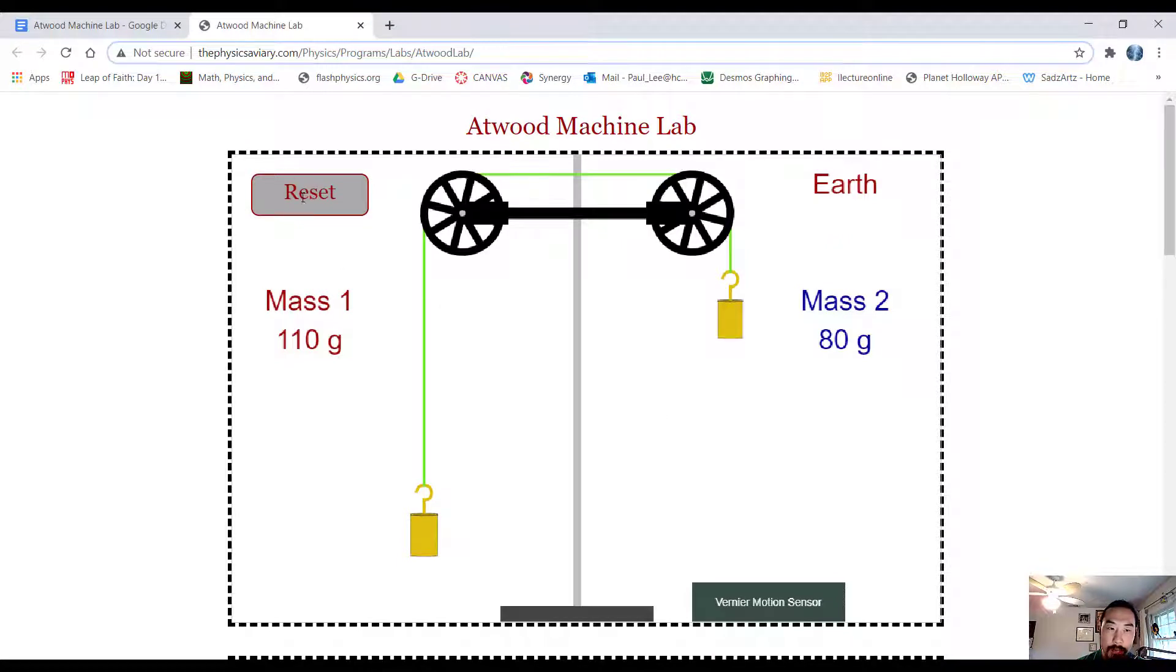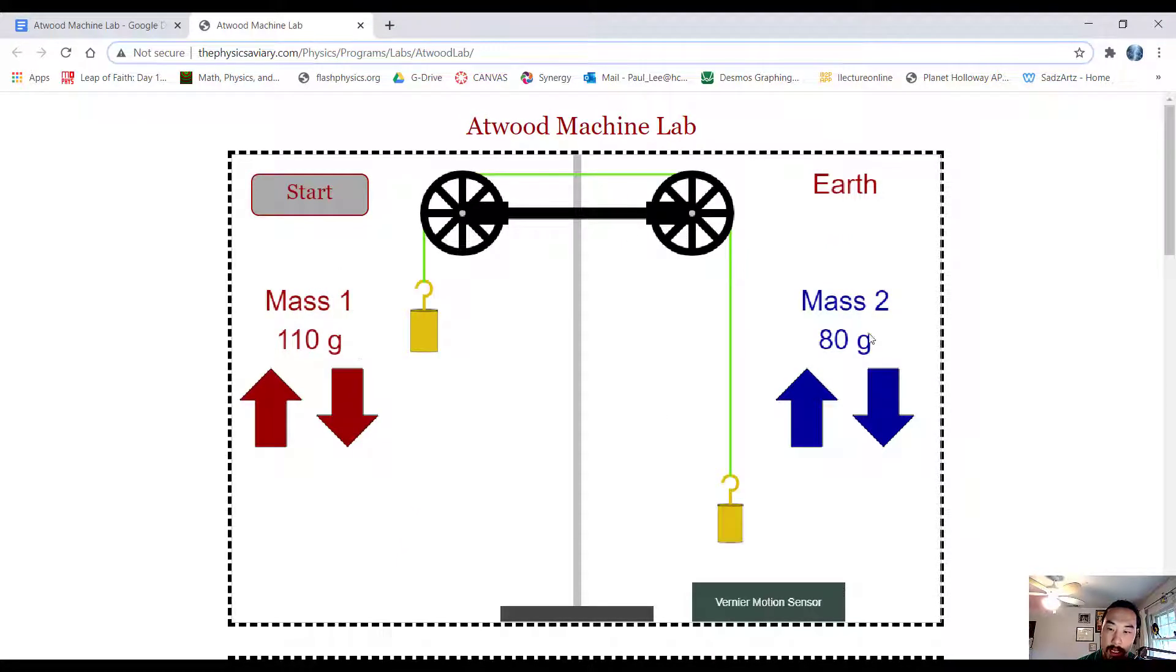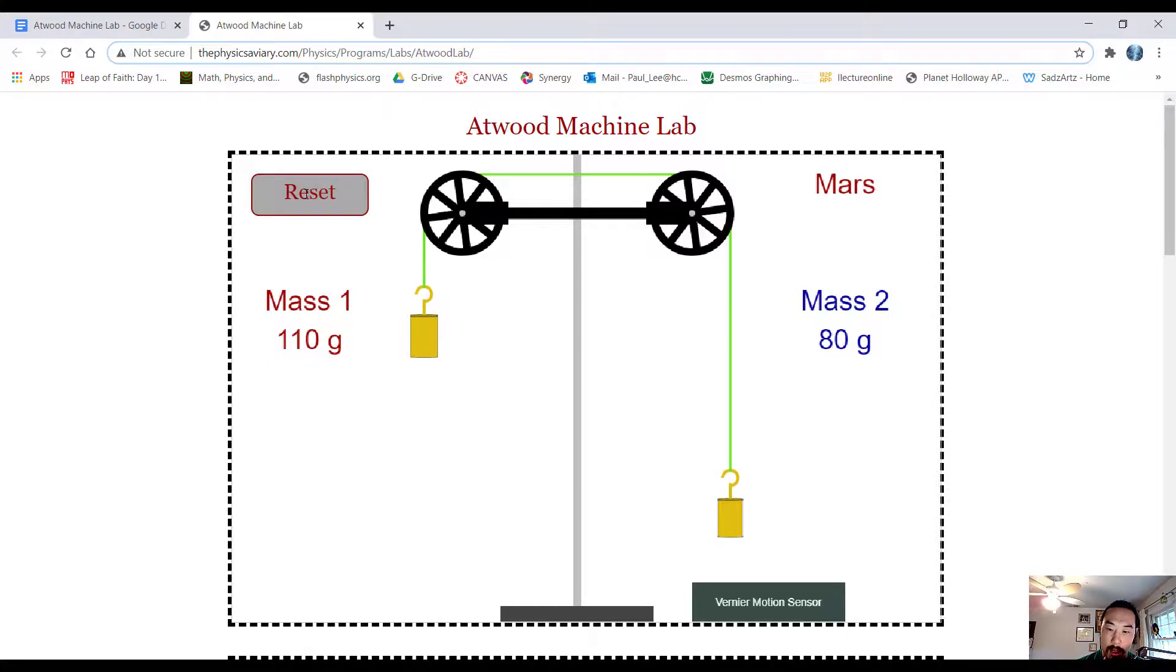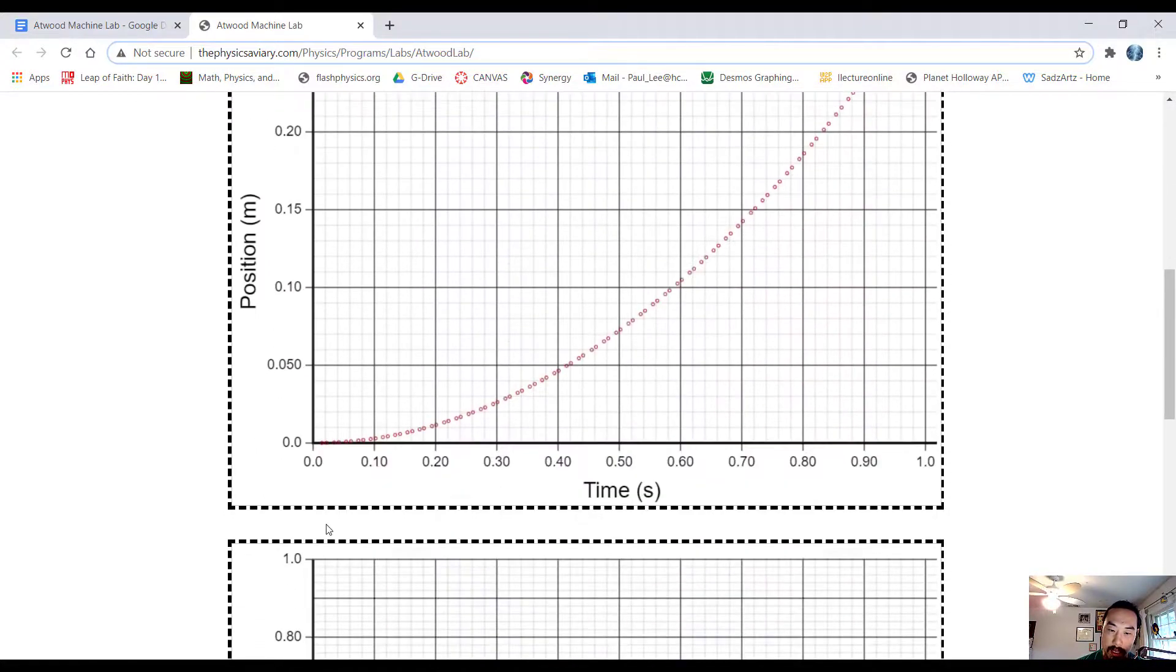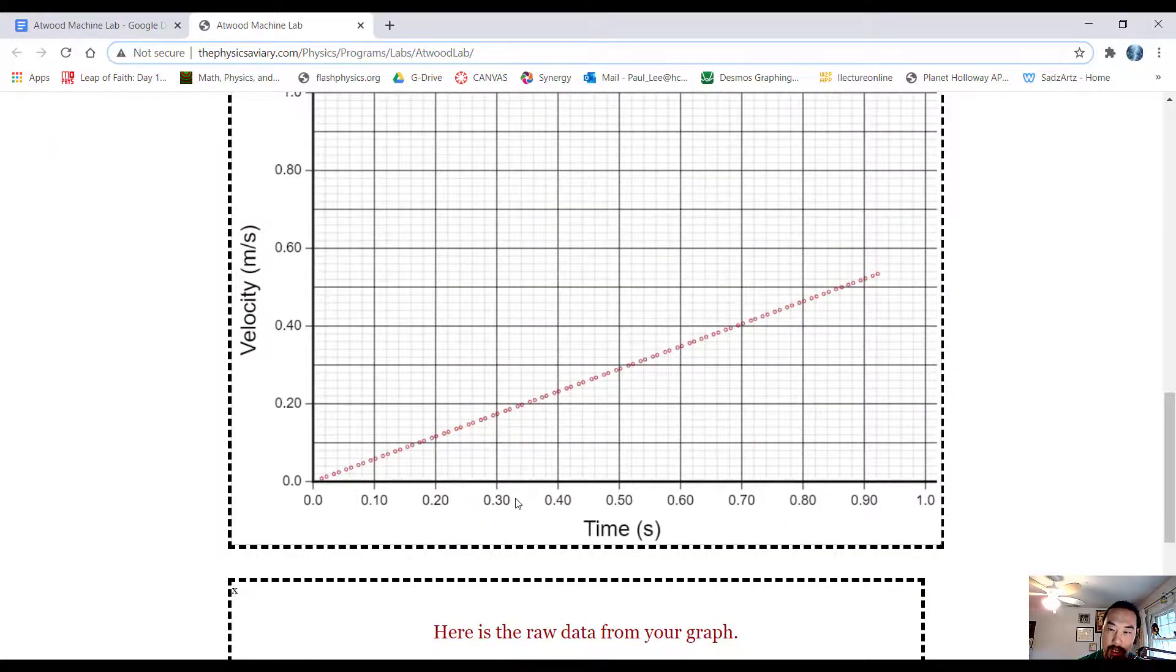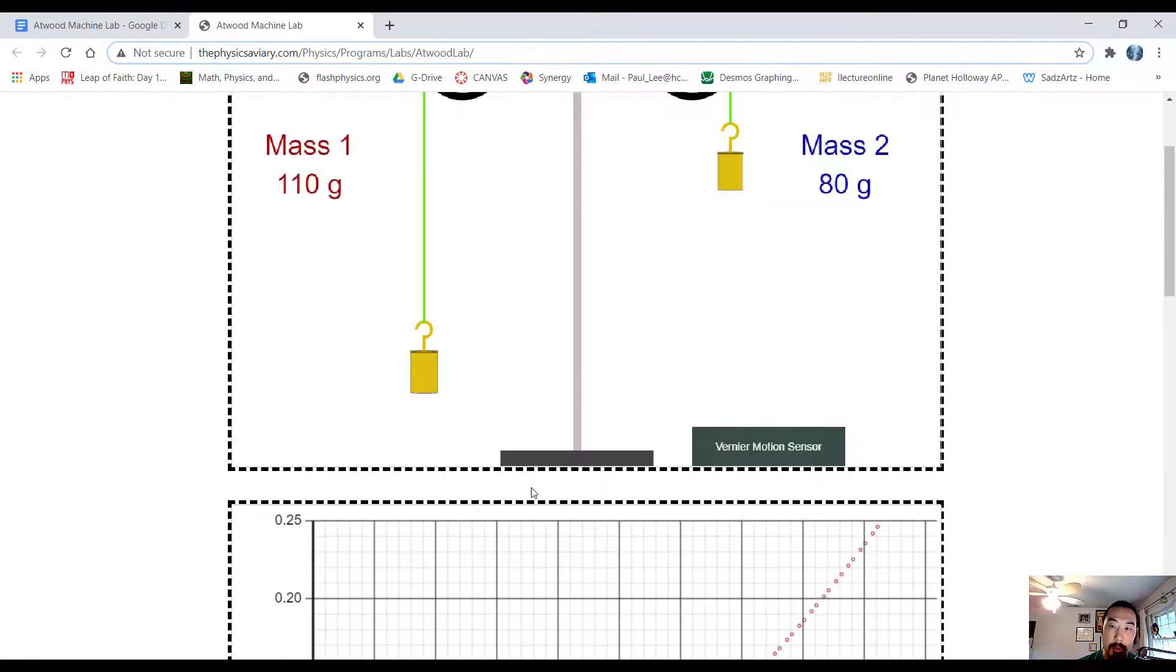The other thing that I want to show you is you can get the same masses, but change it. So what I mean by that is you can change the situation that we're on. So this is something we don't get to do in the classroom. So if I were to do this lab on Mars and I click start, we can see exactly how that affects our data. Okay, so that will be for part two of the lab.